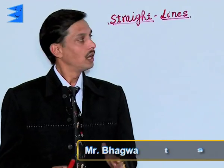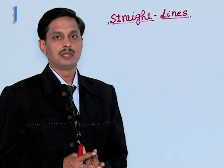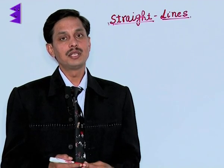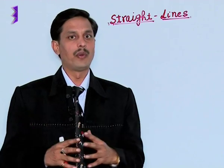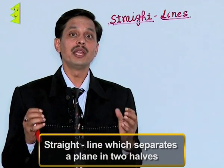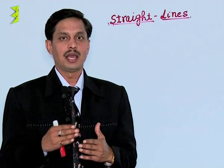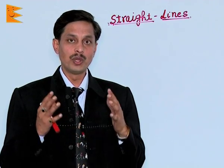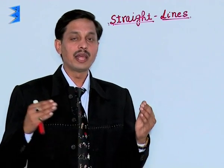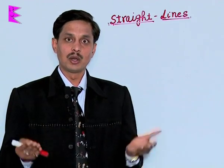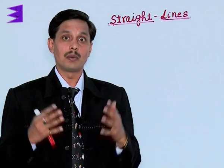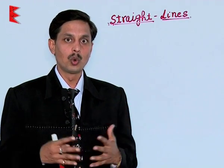I would like to tell you about a topic known as straight lines. The very first question raised here is: what is a straight line? A straight line is that which separates a plane into two halves. If there is a plane and we have drawn a shape separating it in two halves, each is known as a half plane. So the divider or separator of a plane into two half planes is known as the straight line.